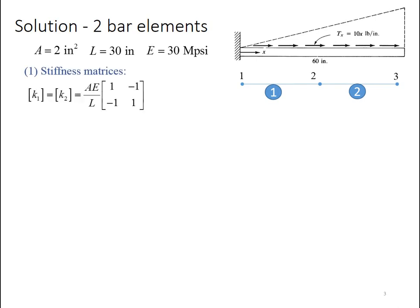K1 equals K2 equals AE over L times [1, -1; -1, 1]. When I plug in the AE and L shown here, I get 2 megapounds per inch multiplied by that same matrix [1, -1; -1, 1]. Notice that pounds per inch is the right units for stiffness.